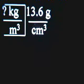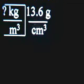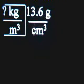Problem number one. We're going to change 13.6 grams per centimeter cubed into kilograms per meter cubed. We have to change the top part of the fraction from grams to kilograms and the bottom part of the fraction from centimeters cubed to meters cubed.